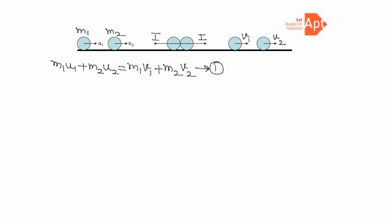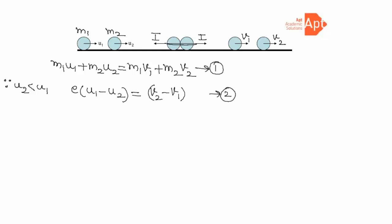Now, what is the velocity of approach? Since u2 is less than u1, the velocity of approach along the line of impact gives us the second equation: e × (u1 − u2) = v2 − v1. This is the coefficient of restitution relation.